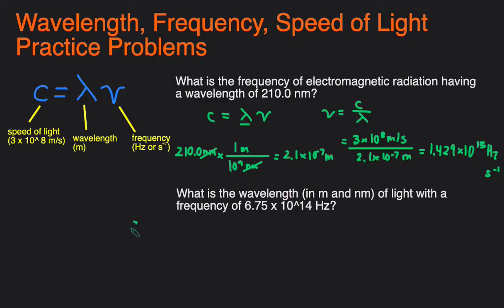So this time we need to solve for wavelength and we're given frequency. We'll start with the regular equation. C equals wavelength times frequency. So to solve for wavelength we just divide both sides by frequency. So the wavelength is going to equal the speed of light divided by the frequency.